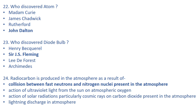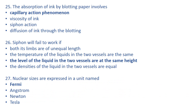Radio carbon is produced in the atmosphere as a result of collision between fast neutrons and nitrogen nuclei present in the atmosphere. The absorption of ink by blotting paper involves capillary action — through capillary action, the absorption of ink by blotting paper takes place.